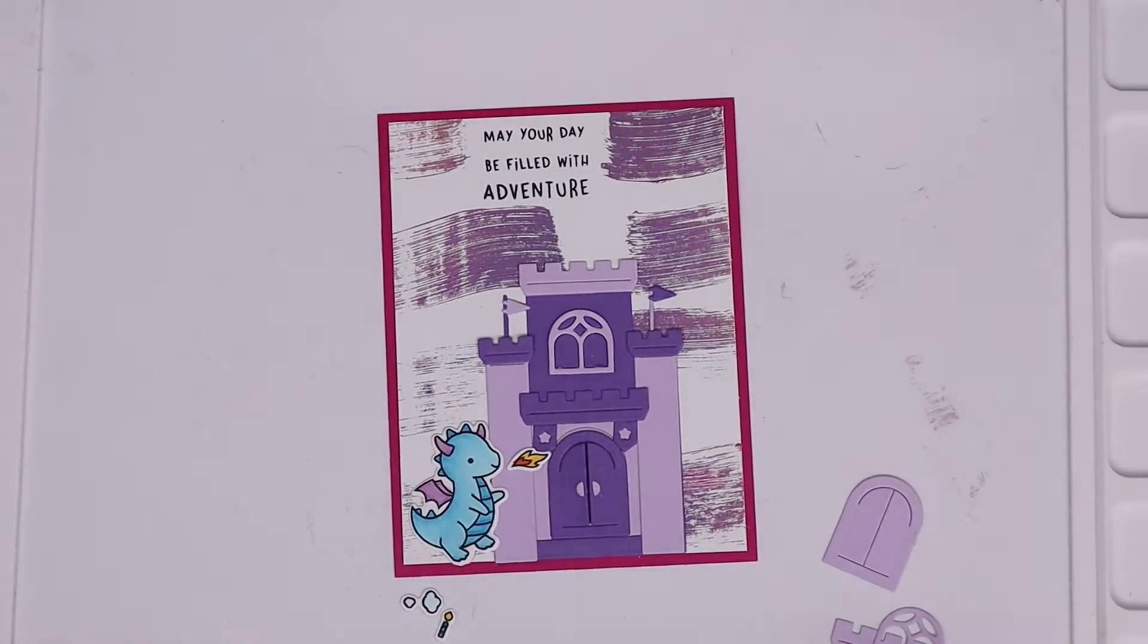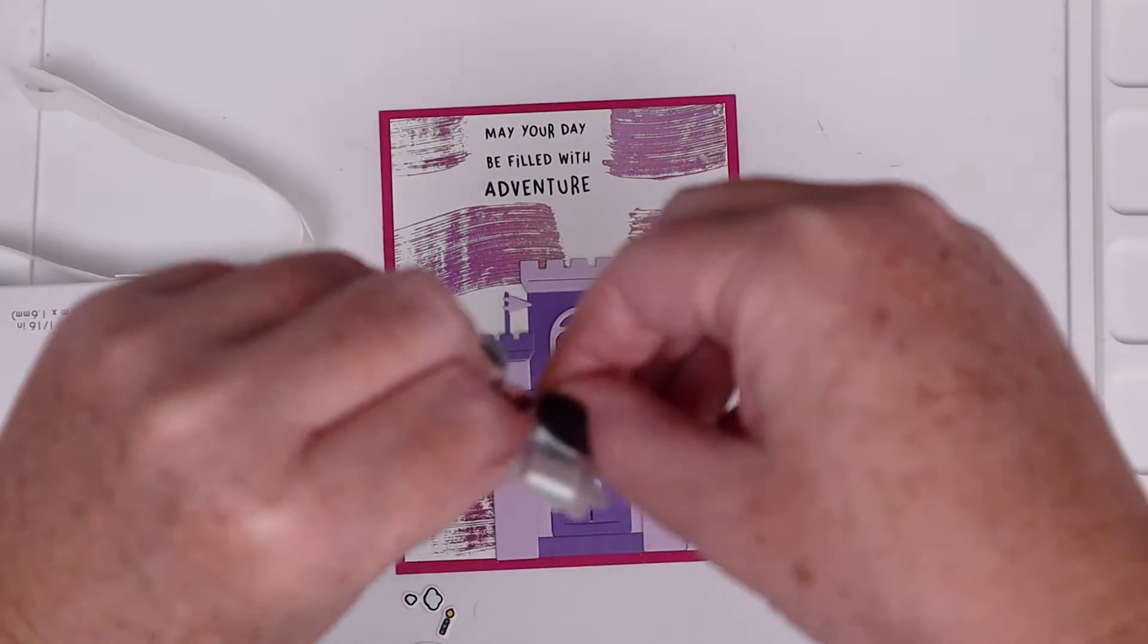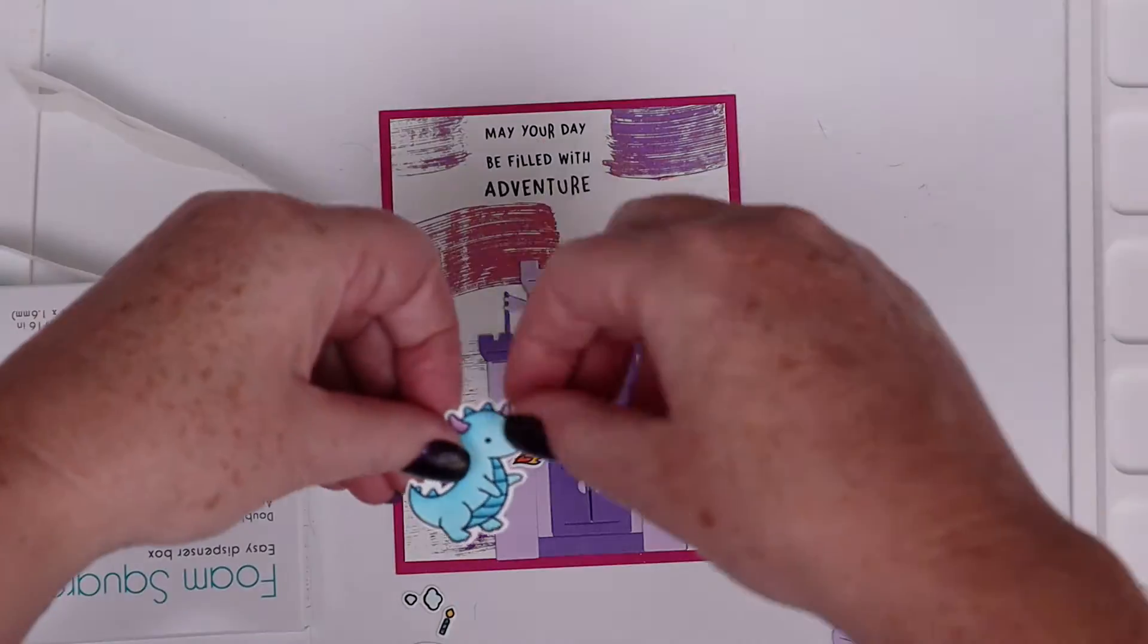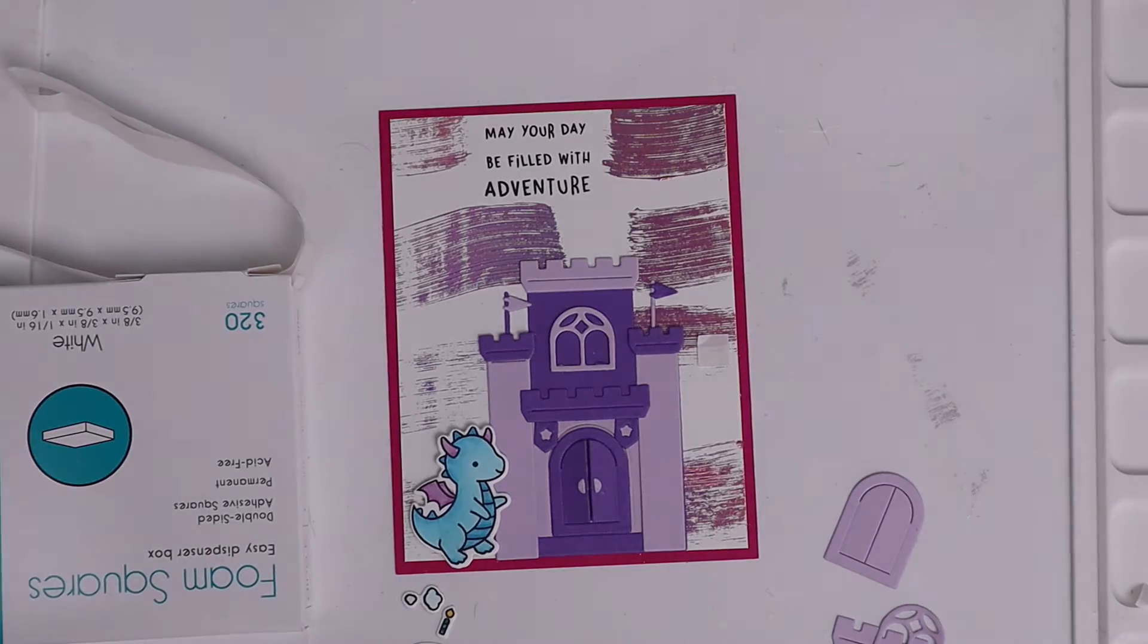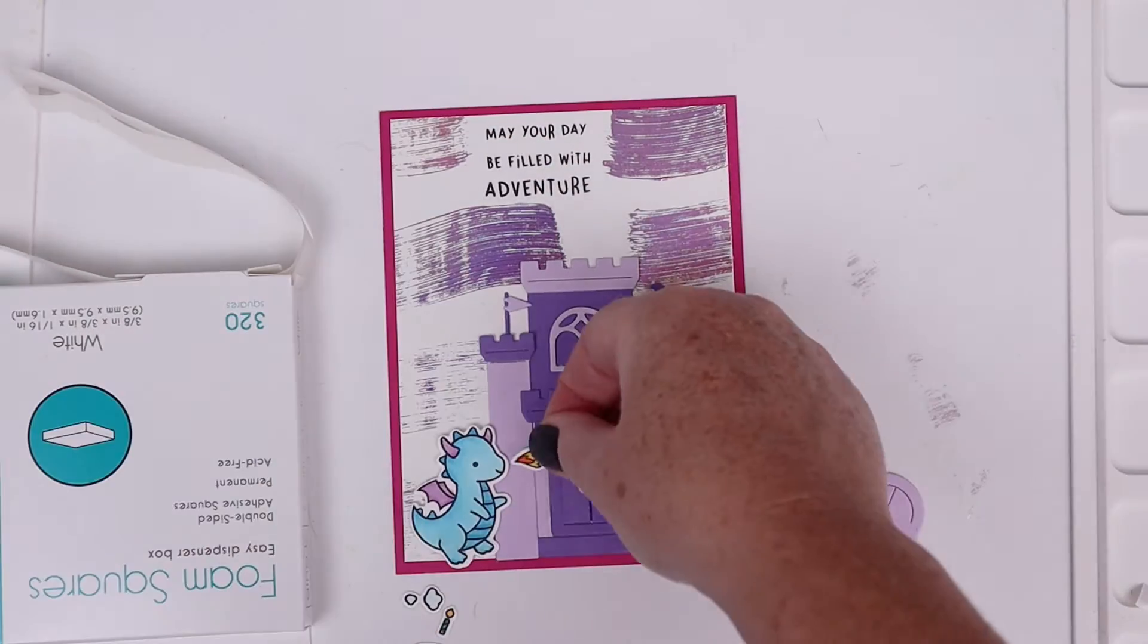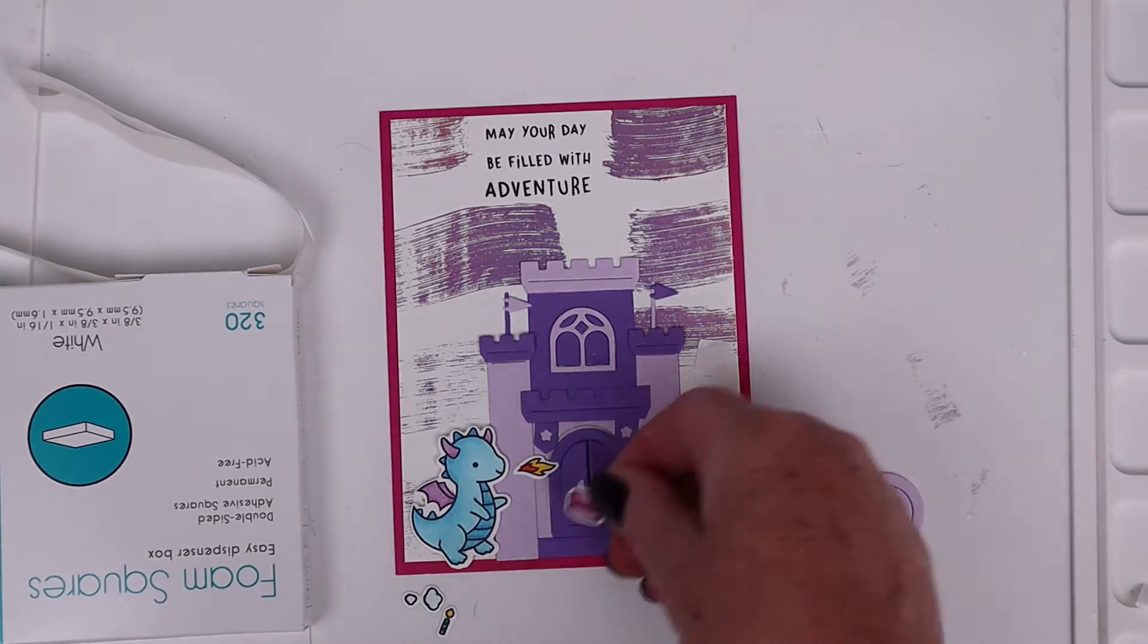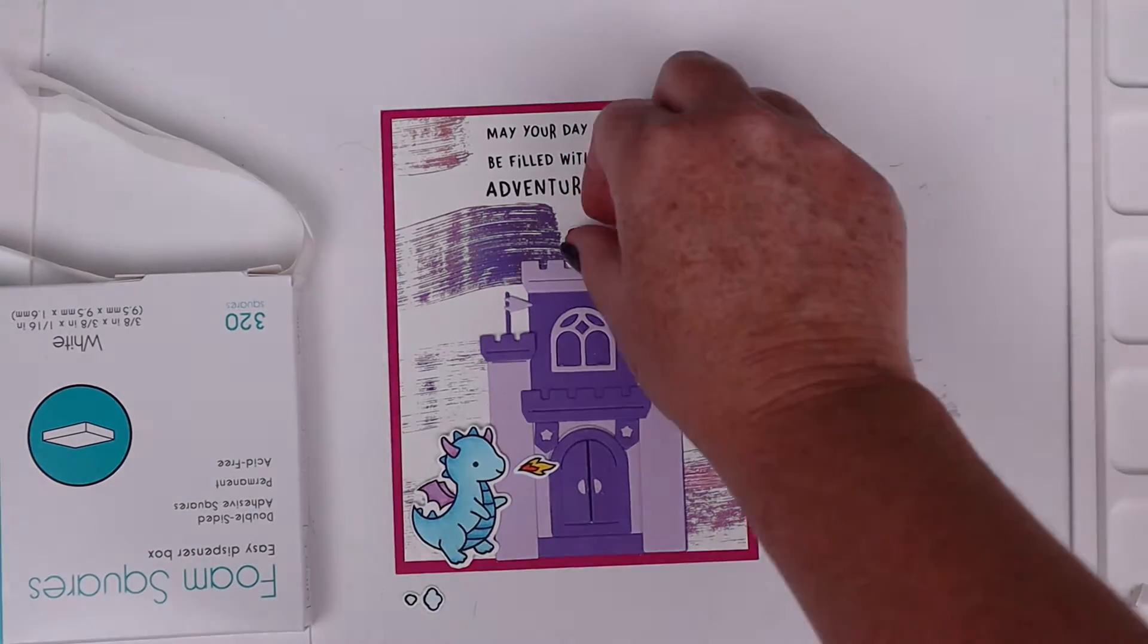I'm going to stamp a sentiment here. We're going along with the fairy tale theme and I'm going to create a bunch of fairy tale fun cards. For this one I used a Lawn Fawn stamp set and that castle die, and those paint swipes in the background which I just thought was really cute. I'm going to pop up my little dragon there with some Gina K for Thermoweb foam squares.